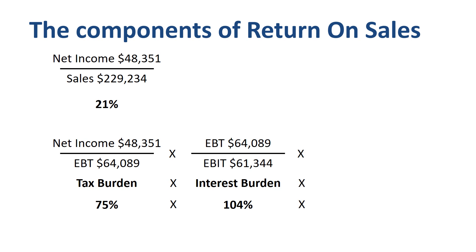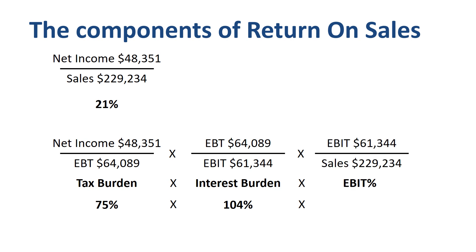Lastly, and this is where we get to the operational metric of EBIT margin, EBIT over sales is 27%, which is high. When you multiply these three components, you obviously get to the same 21% total ROS number that we started with.